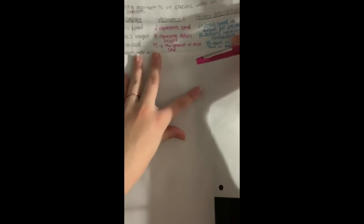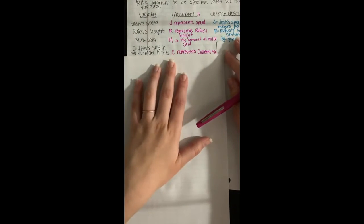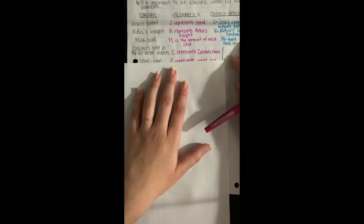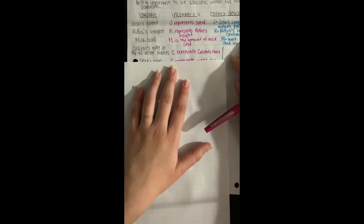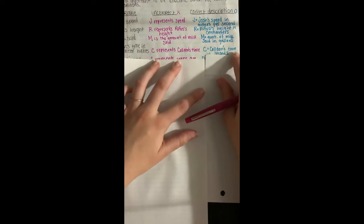So hopefully you're starting to see the pattern. We have to be extra specific. Colleen's time in the 40 meter hurdles. It's not enough to just say C represents Colleen's time. How are you measuring her time? C should be Colleen's time in seconds.